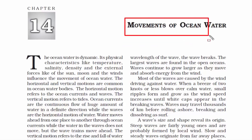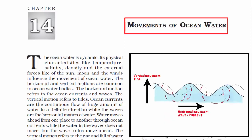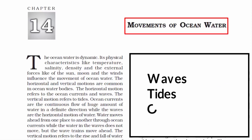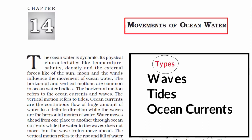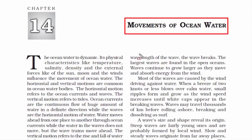This video is on Class 11, Chapter 14, movements of ocean water. In this chapter, we are going to understand the vertical and horizontal movements of ocean water. Then we will read about waves, tides and ocean currents, their different types, their importance, their effects and how they are formed. We will cover all these things one by one in a comprehensive manner. With no further ado, let's begin.